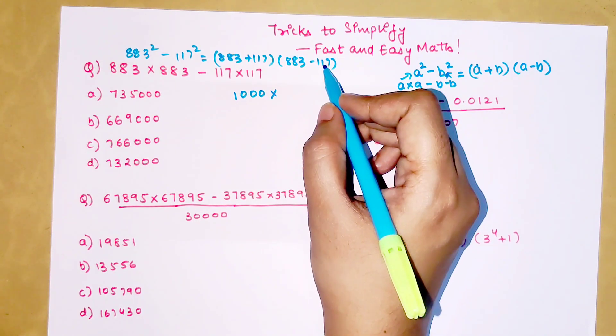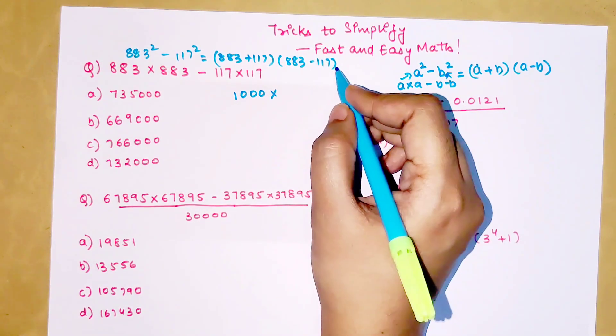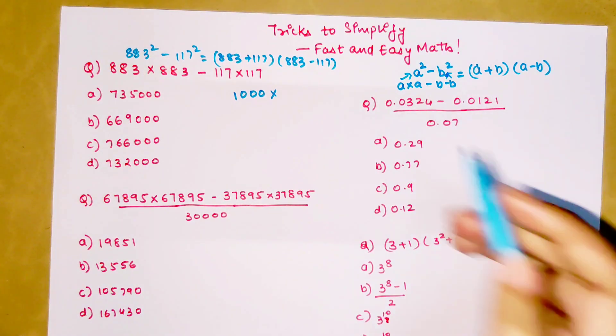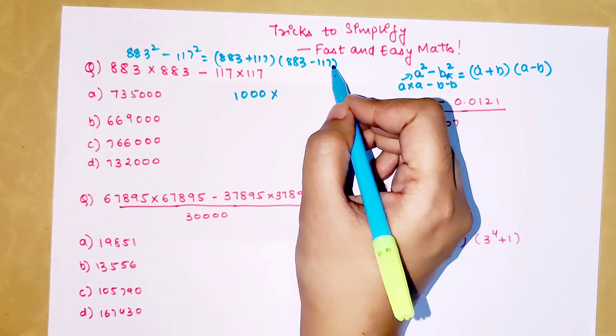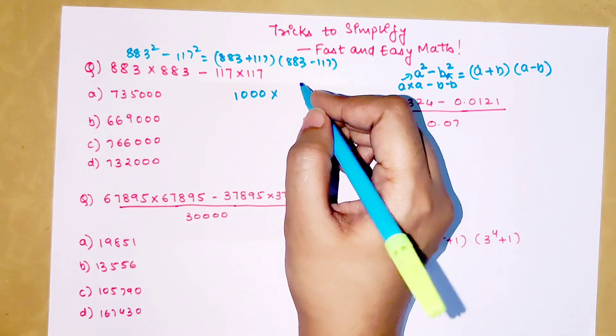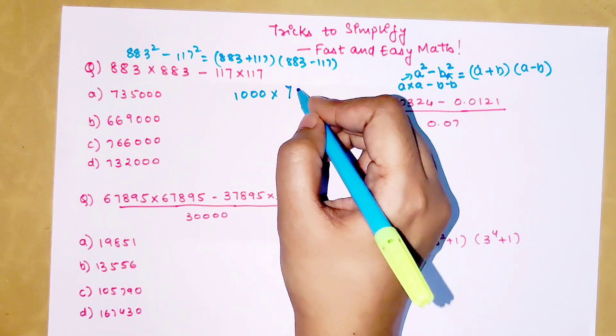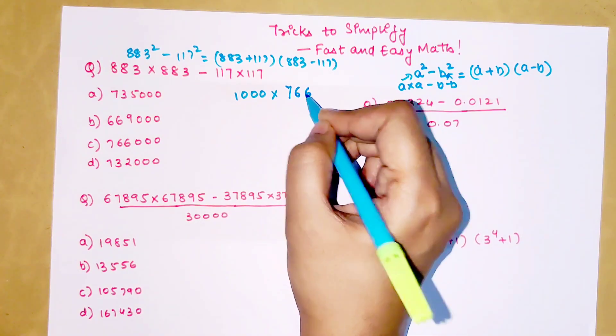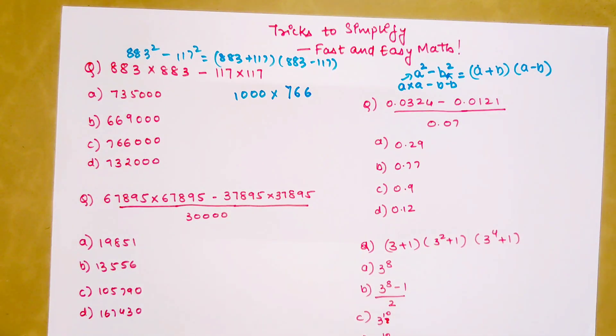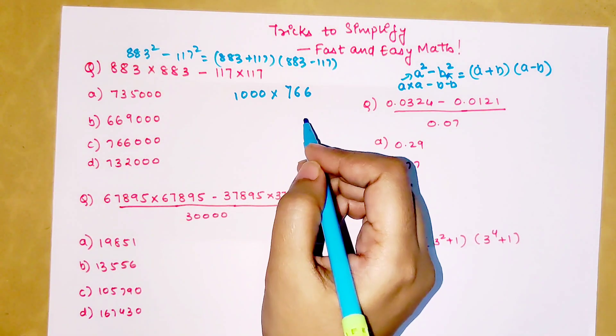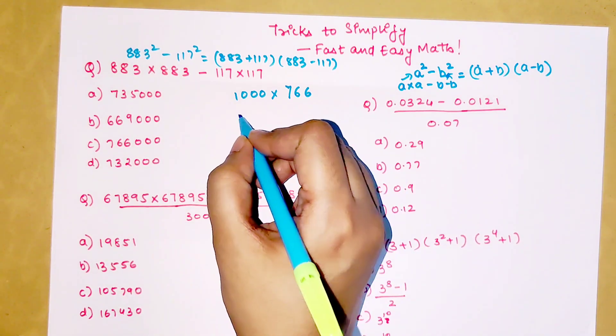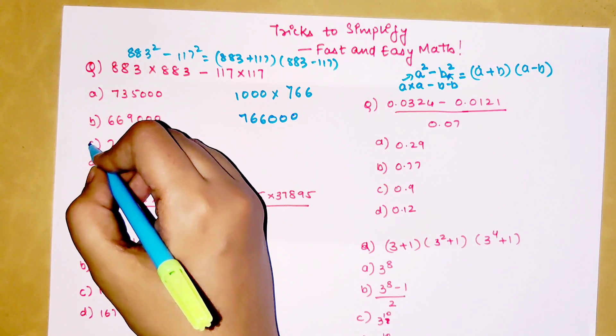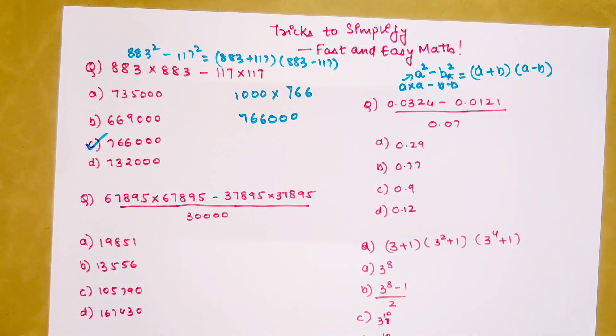And when you subtract 117 from 883, so 7 taken from 13 is 6 and 1 taken from 8 is 6, so you have 766. Your final answer just becomes 766 with three zeros added, so 766,000. Option C is your answer.